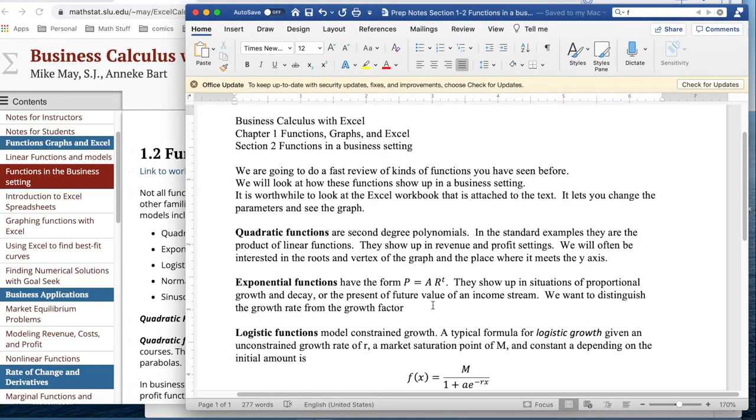Quadratic functions are second-degree polynomials. The standard example we'll use is the product of linear functions. If we're doing both revenue and profit, then we have quantity times a price, and the price is a linear function on the quantity. That gives us a quadratic function. We're often interested in the roots and the vertex of a graph and the place where it meets the x-axis.